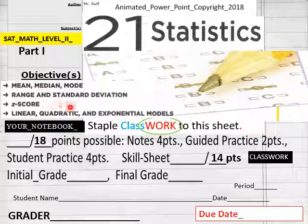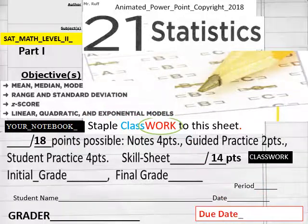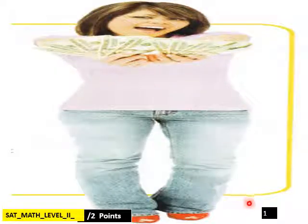And 21 statistics: mean, median, mode, range, and standard deviation, z-score, linear, quadratic, and exponential models. Name, date, period, students, due date for my onliners. And we'll go right into page 1 which is a notebook entry.